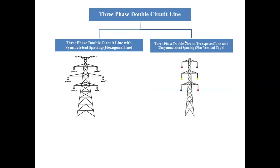For the flat vertical type tower arrangement, the phases are arranged as red, yellow, blue on the left side and blue, yellow, red on the right side. The two three-phase lines run side by side in parallel.